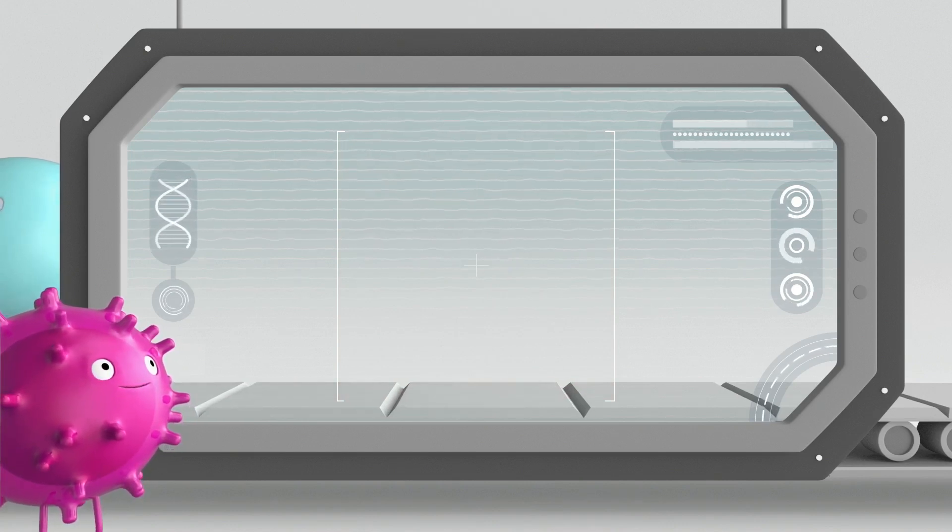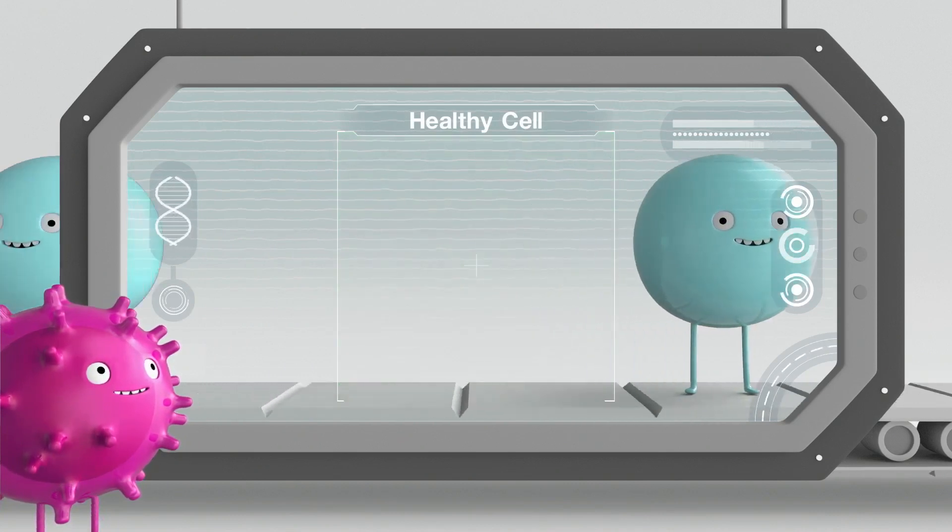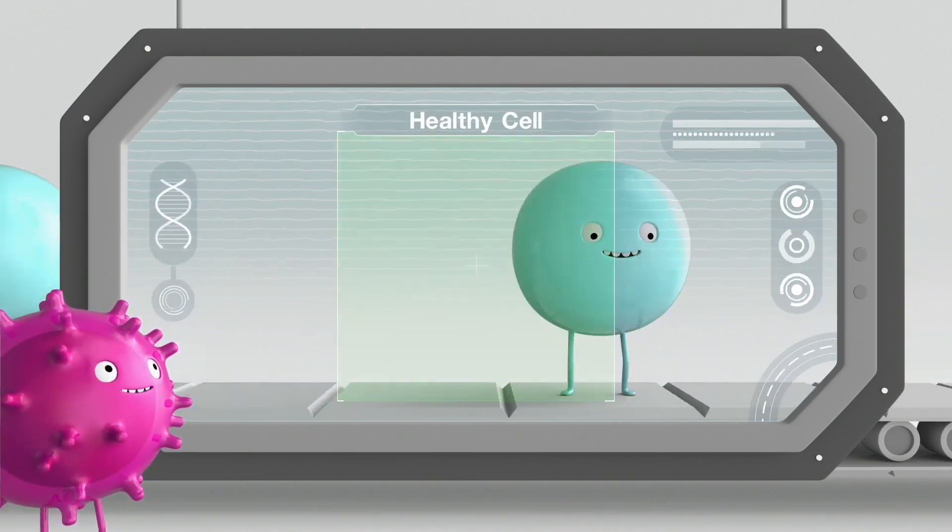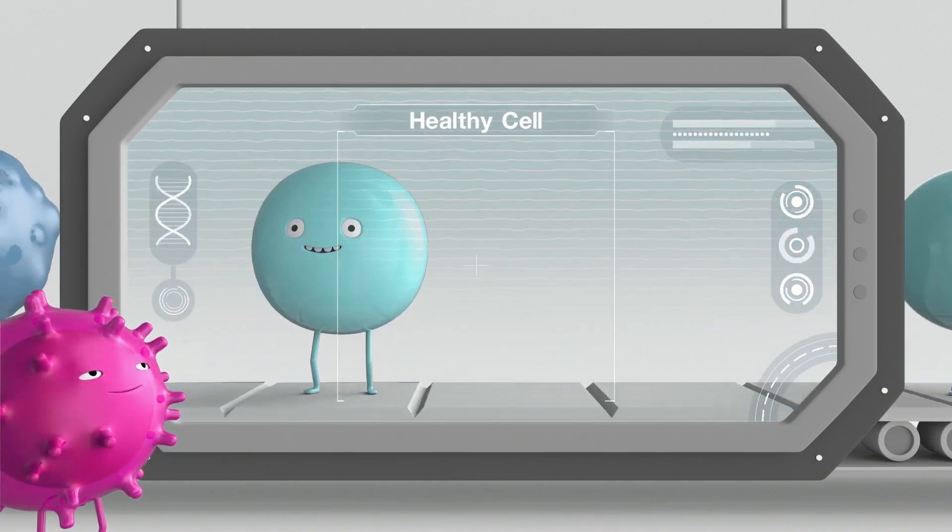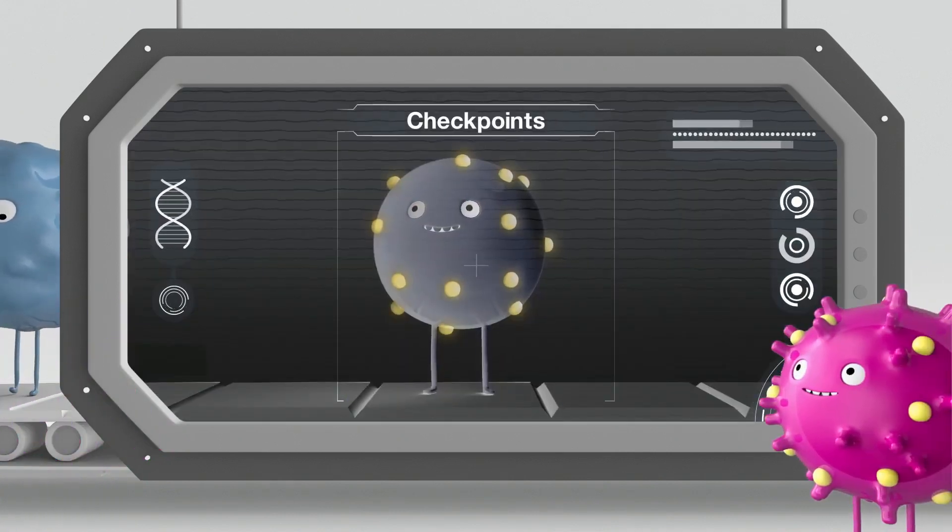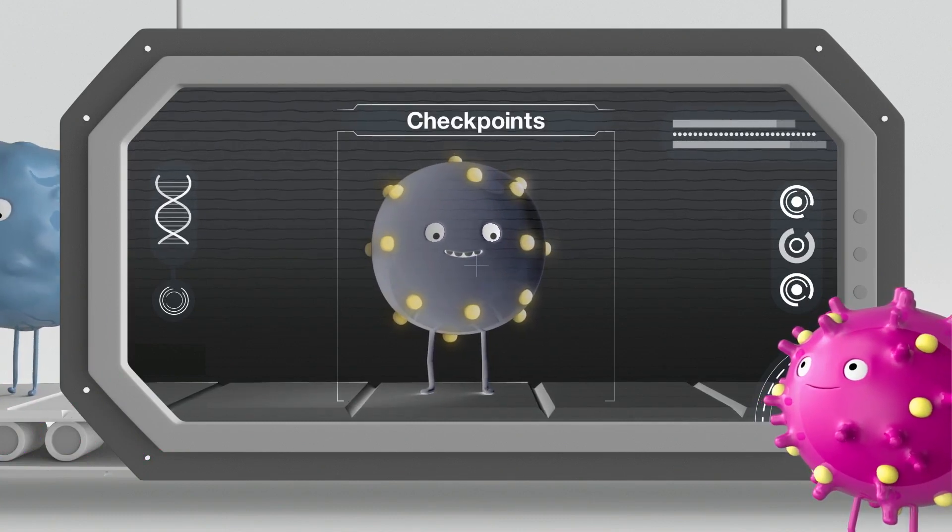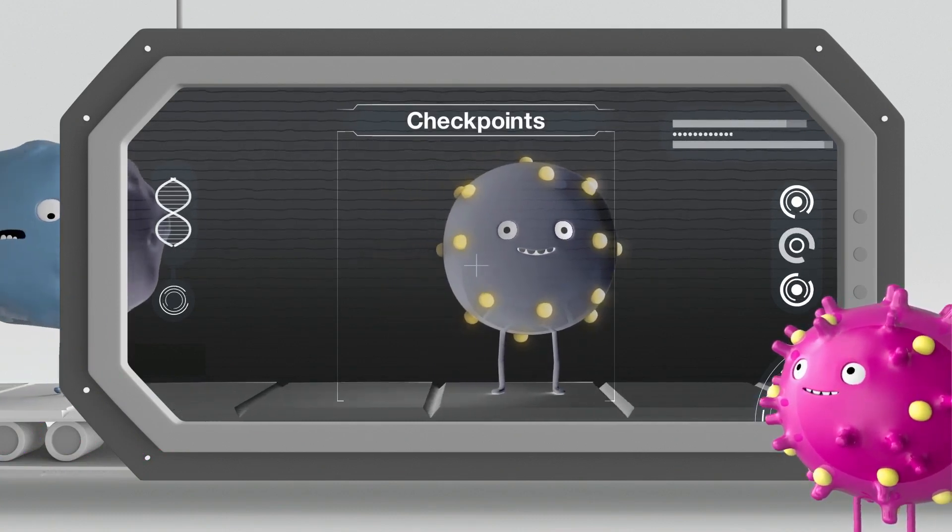Your immune system is very powerful and therefore needs to be carefully controlled. To do this, immune cells and healthy cells work together through the use of special markers called checkpoints. Checkpoints can help your immune system tell which cells are good, your healthy body cells,